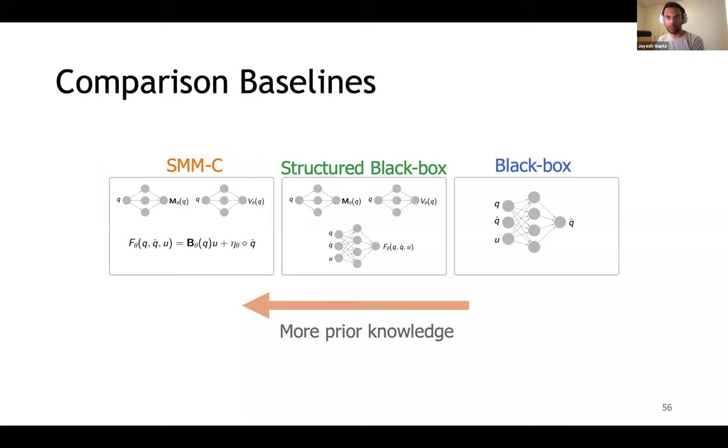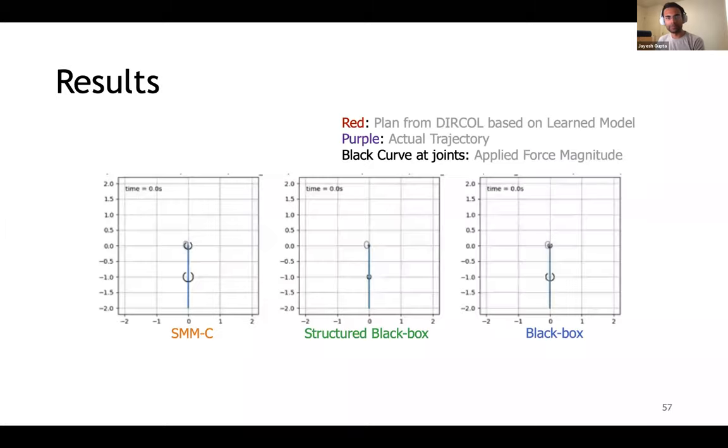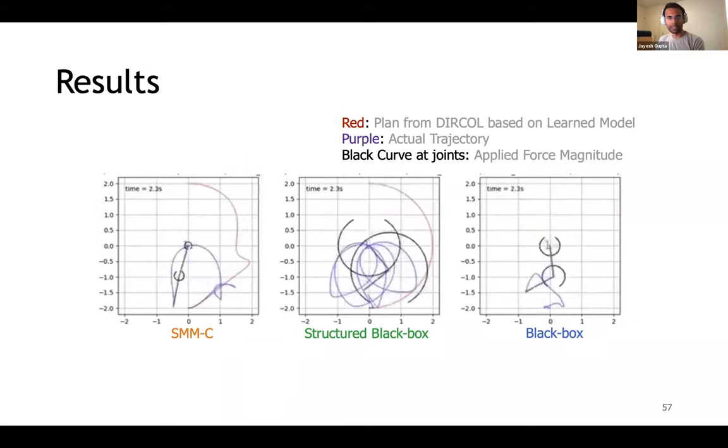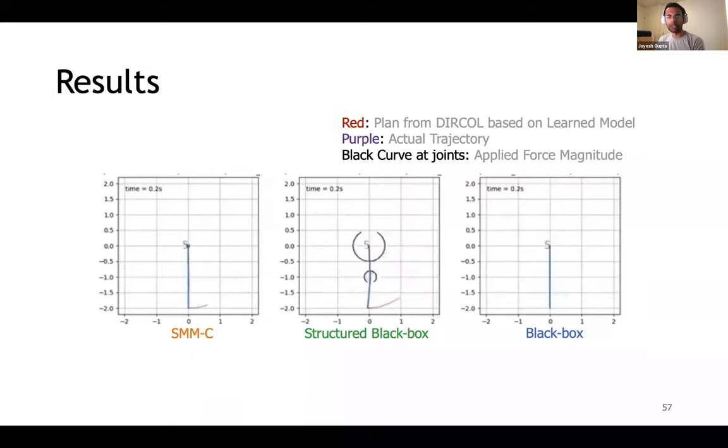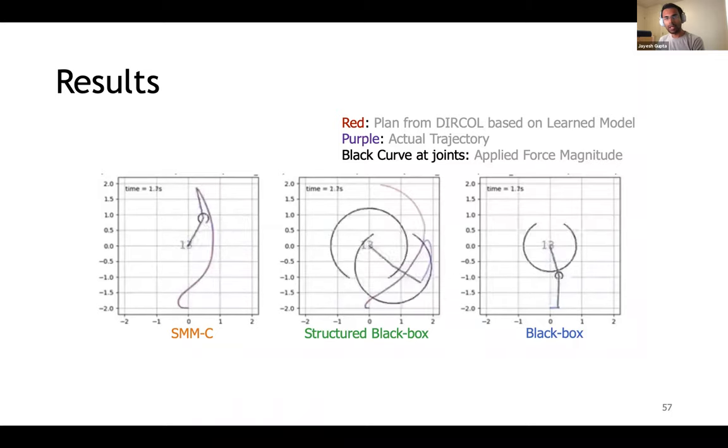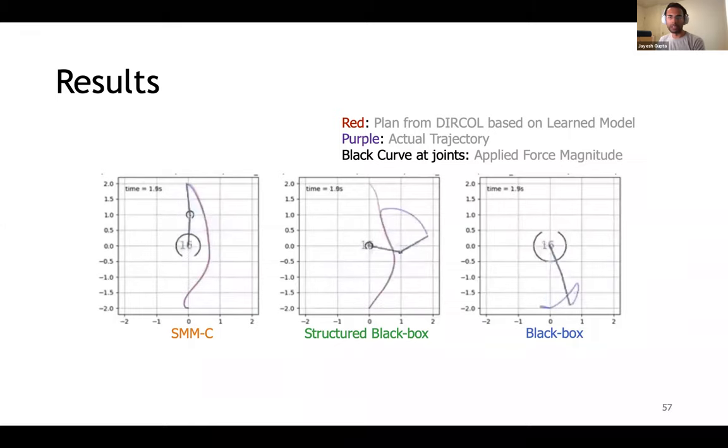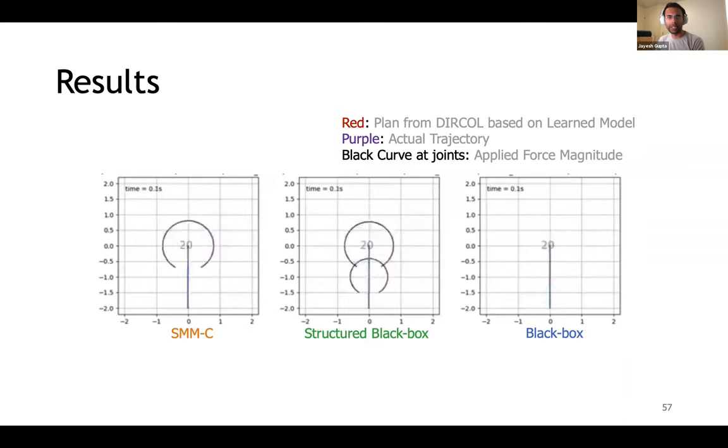We compare across three models. We have the black box network with no structure or prior knowledge put in. We have the proposed structured black box model with no prior knowledge except for the mechanical system. We also have the SMMC model that adds in the structure that the forces are control affine. We also show the corresponding model's performance over training. The trajectory in red is a reference trajectory or the plan from trajectory optimization with the model, while the purple trajectories are actually followed online.